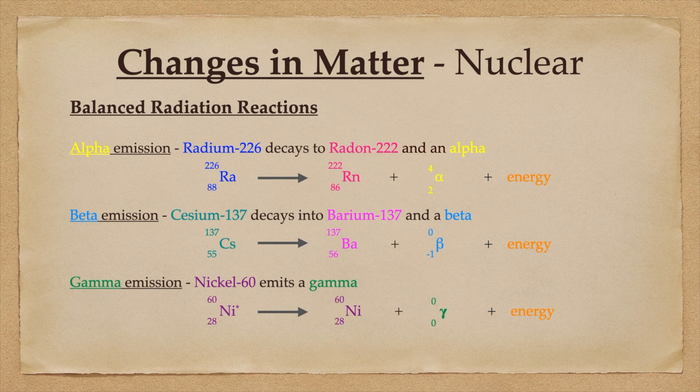A beta emission is actually a fast electron being expelled from the nucleus. So when cesium-137 decays via beta, it produces barium-137, a beta, and some energy. A gamma emission is simply the emission of high energy light or electromagnetic radiation.